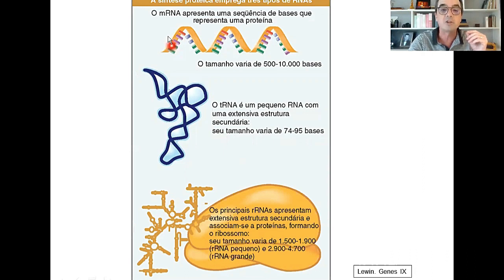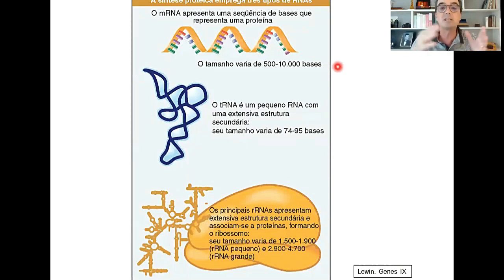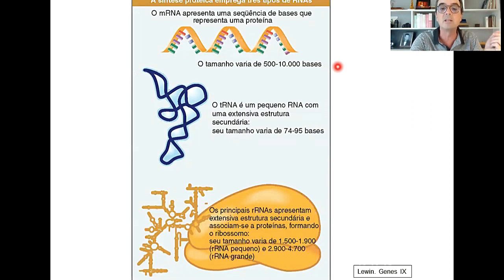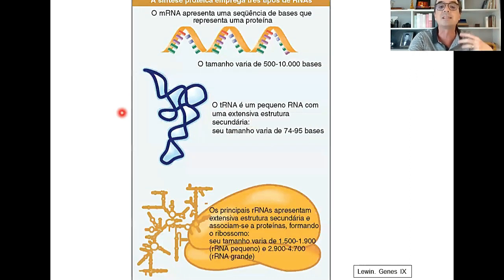Temos o RNA mensageiro, que contém a sequência de nucleotídeos que dará a receita para a síntese de uma proteína — é o RNA que contém a mensagem do DNA. Ele pode ser mais longo ou mais curto, dependendo do tamanho da proteína e do gene transcrito. Existem também RNAs pequenos que são os RNAs transportadores, que não codificam proteínas, mas transportam os aminoácidos para a síntese de proteínas — são personagens coadjuvantes que ajudam na síntese proteica mesmo não contendo informação.